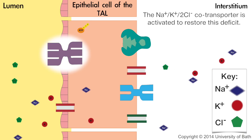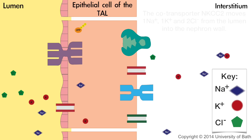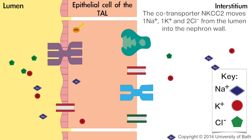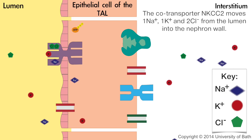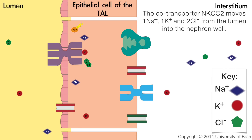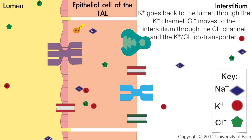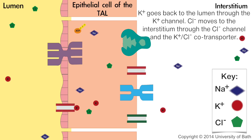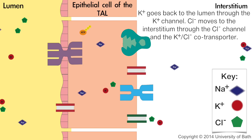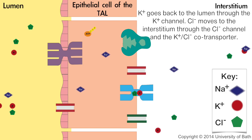The sodium-potassium chloride cotransporter is activated to restore this deficit. The cotransporter NKCC2 moves one sodium, one potassium, and two chloride from the lumen into the nephron wall. Potassium goes back to the lumen through the potassium channel. Chloride moves to the interstitium through the chloride channel and the potassium-chloride cotransporter.